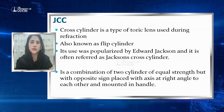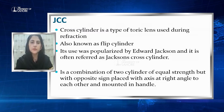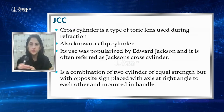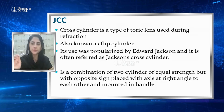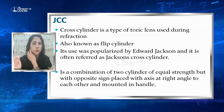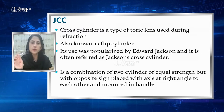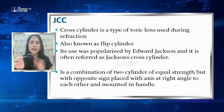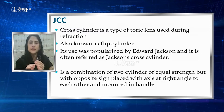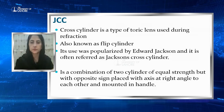Now we will talk about the construction of the Cross Cylinder. It is a combination of two cylinders of equal strength but with opposite signs, placed with their axes at right angles to each other and mounted in a handle. As marked on the device, one meridian is minus and the other is plus, with axes perpendicular — one at 90 degrees and the other at 180 degrees.